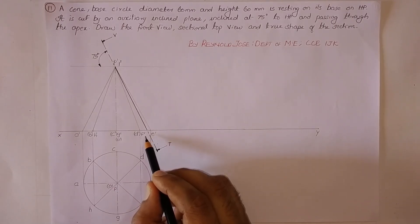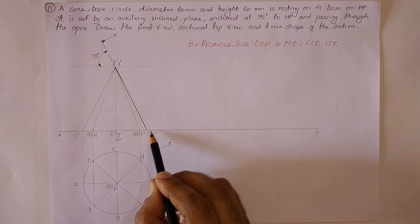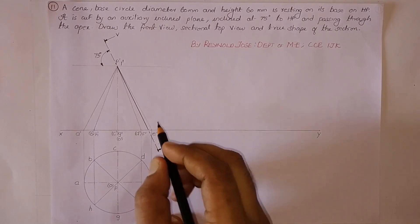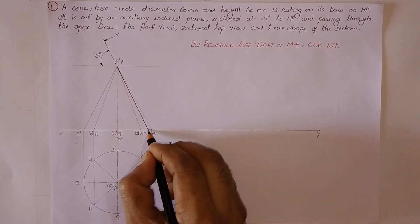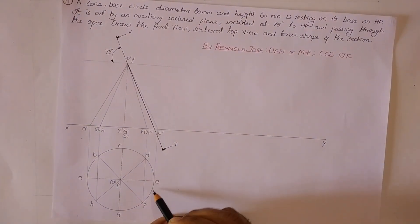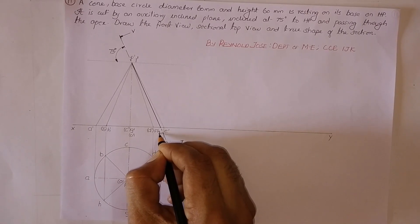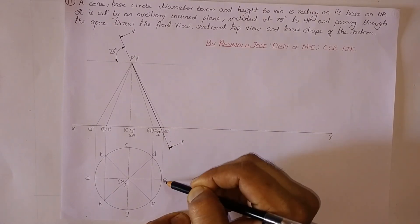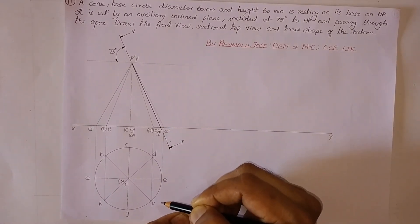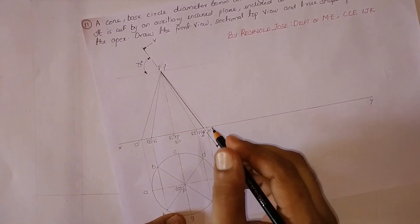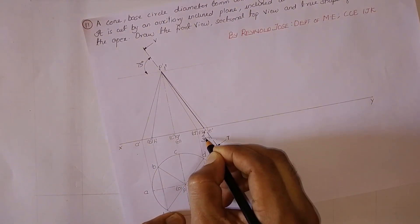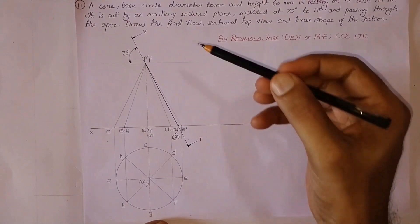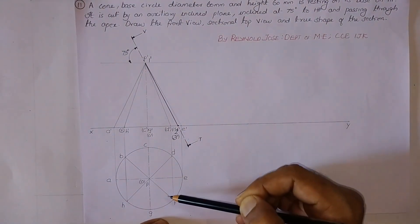The section plane is also cutting the base at FE and ED, giving two cutting points along the base. The visible point, which is along FE, is marked as 2-dash. The invisible point on the other side along ED is marked as 3-dash. So 3-dash is invisible and 2-dash is visible in the front view. Now let us transfer points 1-dash, 2-dash, and 3-dash to the top view.